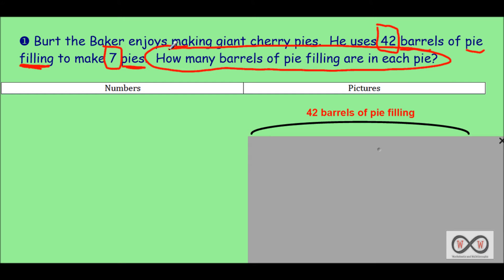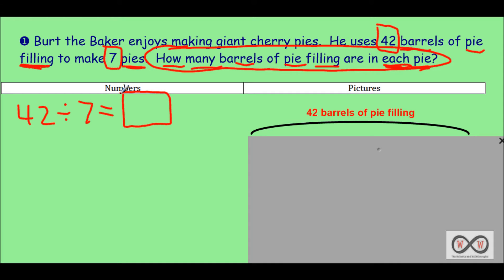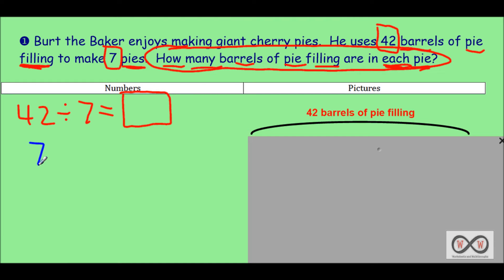And you might be thinking there's a math job in there someplace — you'd be exactly right. 'How many barrels of pie filling are in each pie?' That's your math job. So our known bits of information: we have 42 barrels of pie filling shared among seven pies. Our unknown is how many barrels of pie filling are in each pie. You could also think of this using the inverse of division — multiplication. Seven is a known factor, our unknown factor is the number of barrels per pie, and we know we have 42 barrels altogether.